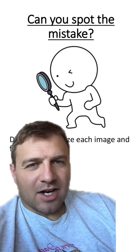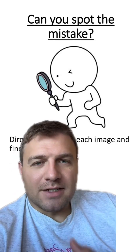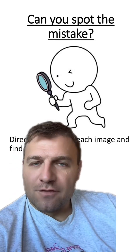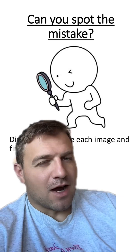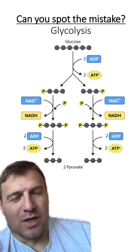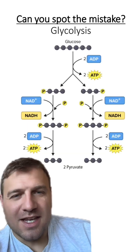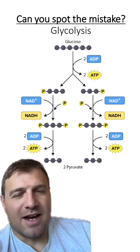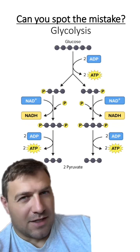Can you spot the mistake in these diagrams of cellular respiration? I'm going to show you a diagram of each of the four steps of cellular respiration. You have to figure out where the mistake is. Here's our first one: glycolysis. There is a major mistake within this diagram. Can you spot it?